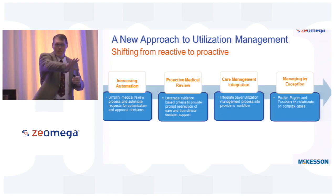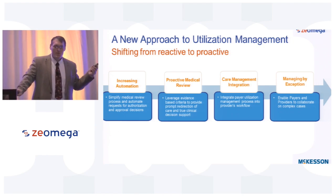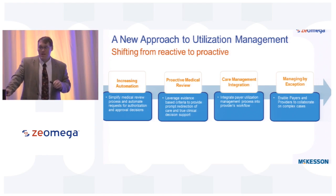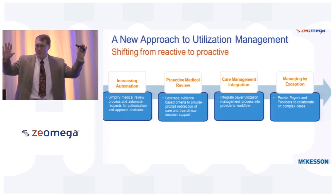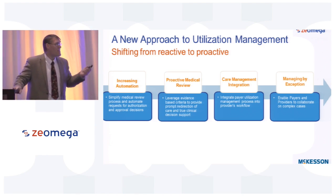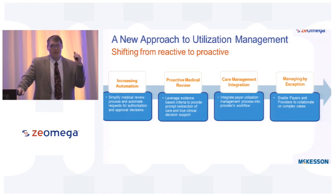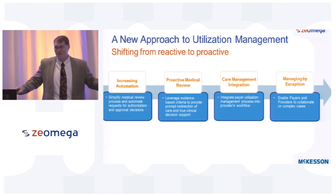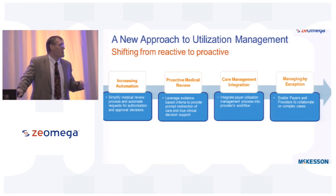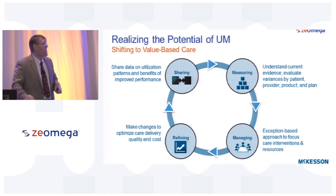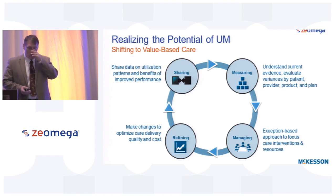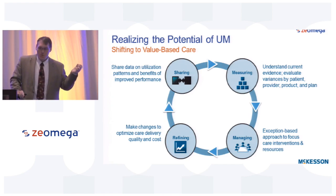Making sure in the payer's utilization management system, you're also getting that care management integration. That's where we really came to the Xeomega and Jiva team and said, how do we make this provider and payer conversation more collaborative? And then lastly, manage the exceptions. If I was a utilization management coordinator in a payer system, and all I did was rubber-stamp prior authorizations, we have to figure out how do we allow ourselves to manage the exceptions so we're working on the very complex cases, the ones that are driving our costs. It's really around realizing the potential of UM — the measure, manage, refine process.